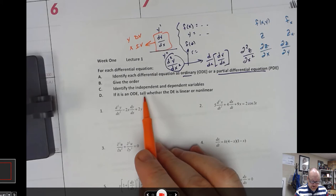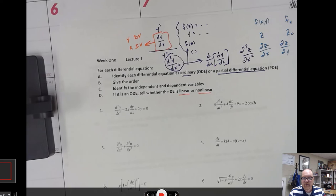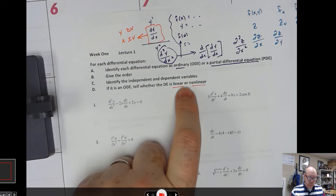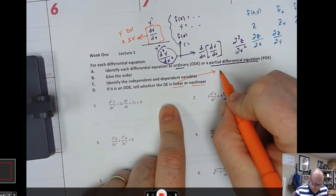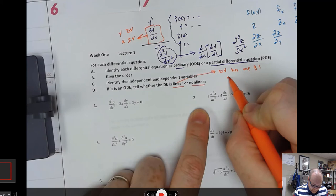Lastly, if it's an ordinary differential equation, tell whether it's linear or nonlinear. You should have some sense of what linear means from past courses — typically things that are linear have an exponent of one. That idea morphs a bit in differential equations: linear means the dependent variable has an exponent of one, and not only the dependent variable, but any of its derivatives as well.